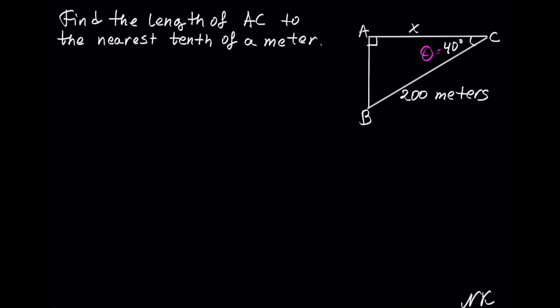The trigonometric function that uses the adjacent side and the hypotenuse is cosine. Cosine of theta is the ratio of adjacent side divided by hypotenuse. So let's substitute our values and solve.